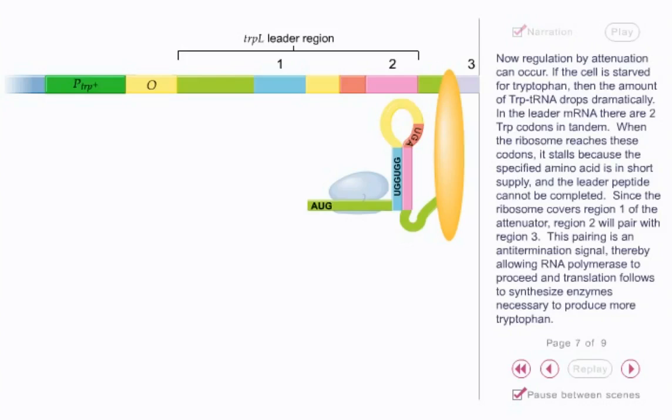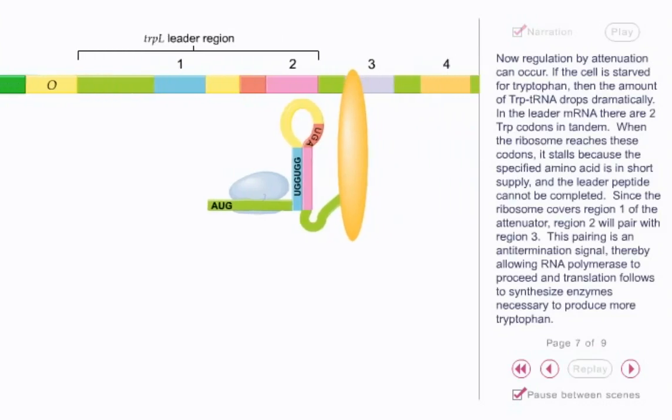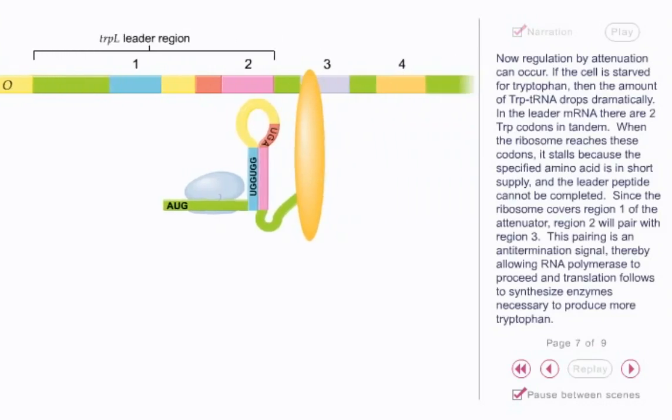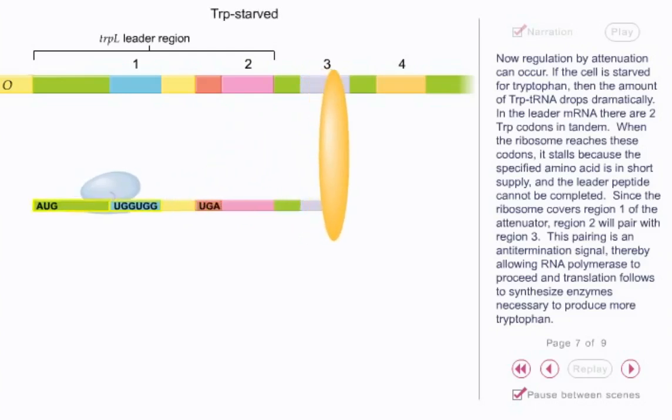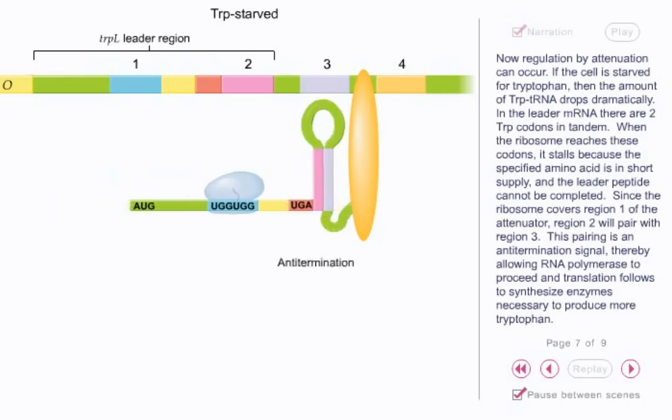Now regulation by attenuation can occur. If the cell is starved for tryptophan, then the amount of trp-tRNA drops dramatically. In the leader mRNA, there are two trp codons in tandem. When the ribosome reaches these codons, it stalls because the specified amino acid is in short supply and the leader peptide cannot be completed. Since the ribosome covers region 1 of the attenuator, region 2 will pair with region 3. This pairing is an anti-termination signal, thereby allowing RNA polymerase to proceed, and translation follows to synthesize enzymes necessary to produce more tryptophan.